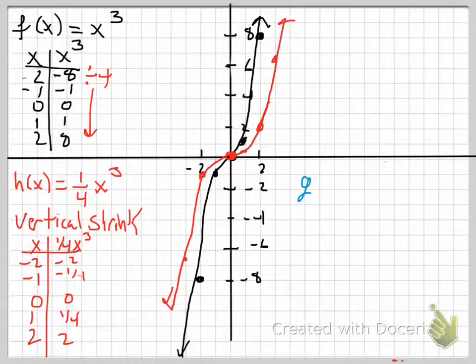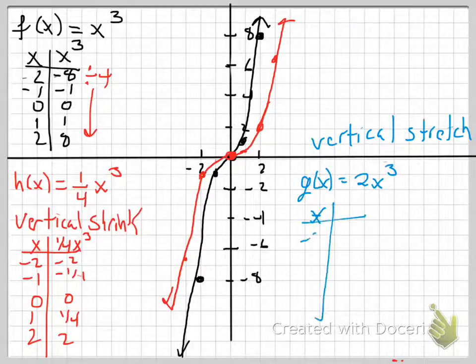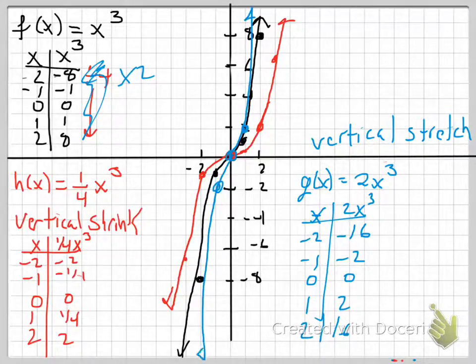The next one we're going to look at is a vertical stretch. And we'll just do by multiply by 2x cubed. So what that's going to do is that's going to double all my outputs. I'm not going to be able to fit the 16s on my graph. It's just not going to fit.